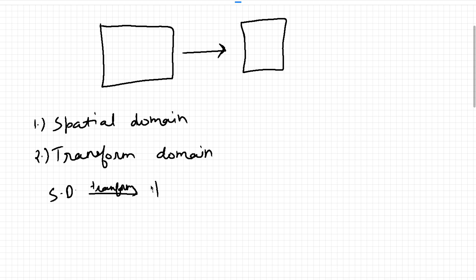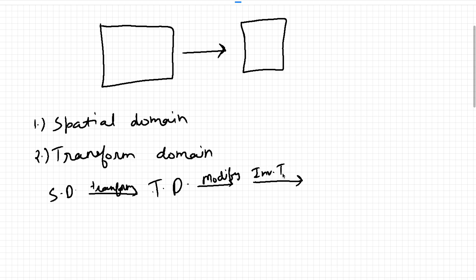Once we have the image in the transform domain, we modify it there. Earlier we were changing pixels directly in the spatial domain; now we do this modification in the transform domain. After modifying the image, we apply the inverse transform to get the image back into the spatial domain, since we want to visualize it there.